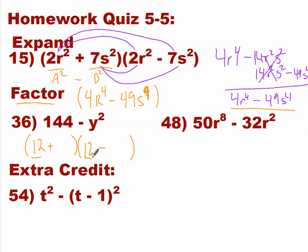If it's not a perfect square, you're going to have to look for something else. For our second term, what are we going to put? The square root of y squared. What times itself is equal to y squared? Y. So the second term is simply y. That was awfully easy, wasn't it?